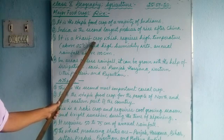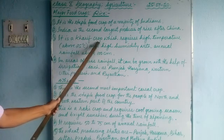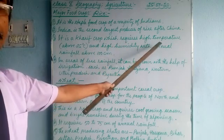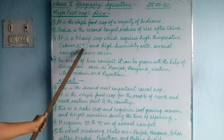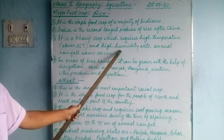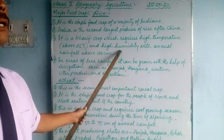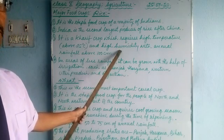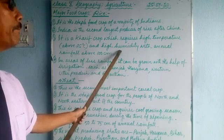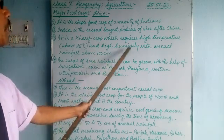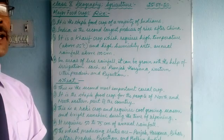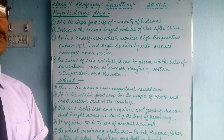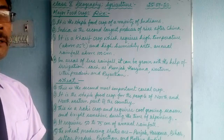It is a Kharif crop which requires high temperature — above 25 degrees centigrade — and high humidity. Humidity means the moisture contained in the air. It requires high humidity with annual rainfall above 100 centimeters. Wherever it rains above 100 centimeters, you can grow rice properly.